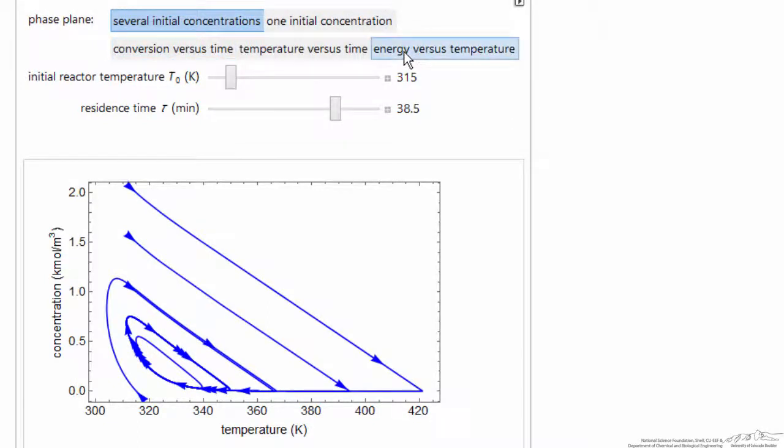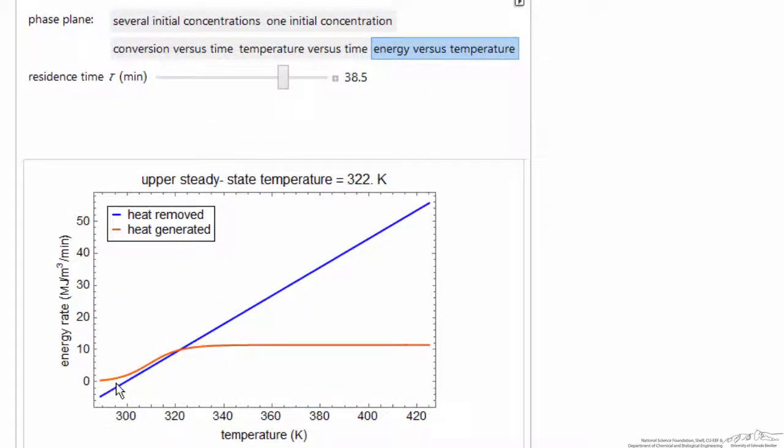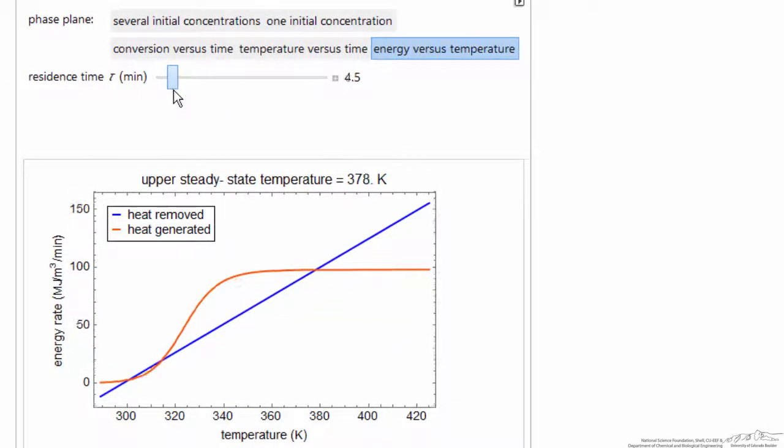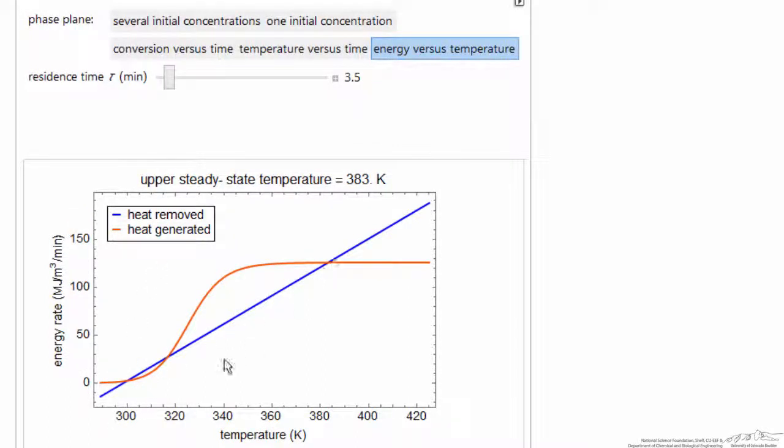Let's look at this energy versus temperature diagram. Energy balance, basically one of these is a mass balance and one is an energy balance. And as I change the residence time, notice I'll get the residence time where now we have three intersections, which means three solutions, two of which are stable.